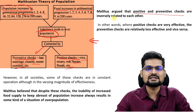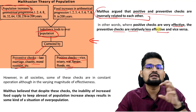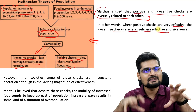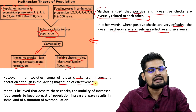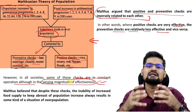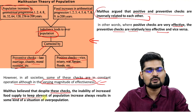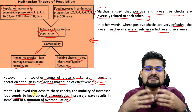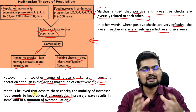Malthus argued that positive and preventive checks are inversely related to each other: if positive checks are very effective, preventive checks are relatively less effective in a given area at that point of time. He propounded this inverse relationship — both checks cannot happen together; as one increases, the other decreases. However, in different societies some of these checks are in constant operation, although with varying magnitude of effectiveness.